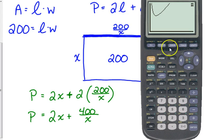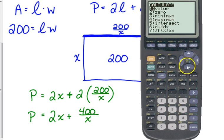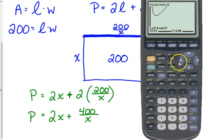If you've never done this before, press second trace. Number three is minimum. It asks for a left bound. You need to move your cursor so that it is on the left side of that minimum value right there. Press enter, move it to the right side, press enter, and then just press enter again for the guess.